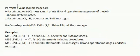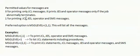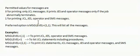Permitted values for messages are 0 and 1. 0 is for printing only JCL messages, only if the job abnormally terminates. The value 1 indicates printing JCL, JSC, operator, and SMS messages. SMS is nothing but the storage management system. The preferred option for MSGLEVEL is 1,1 — it will list all the messages.